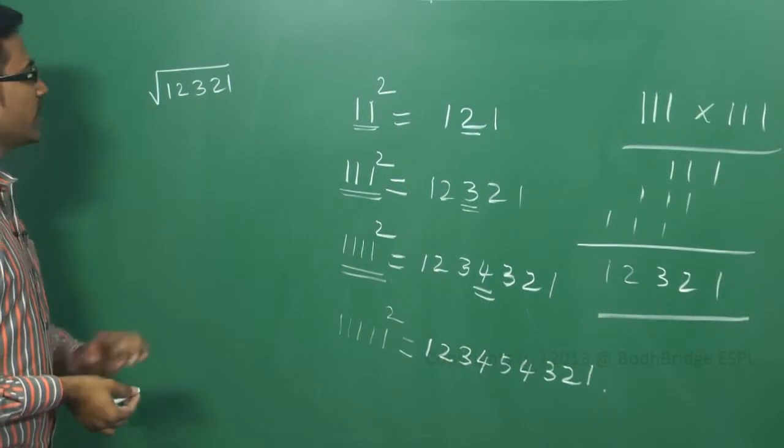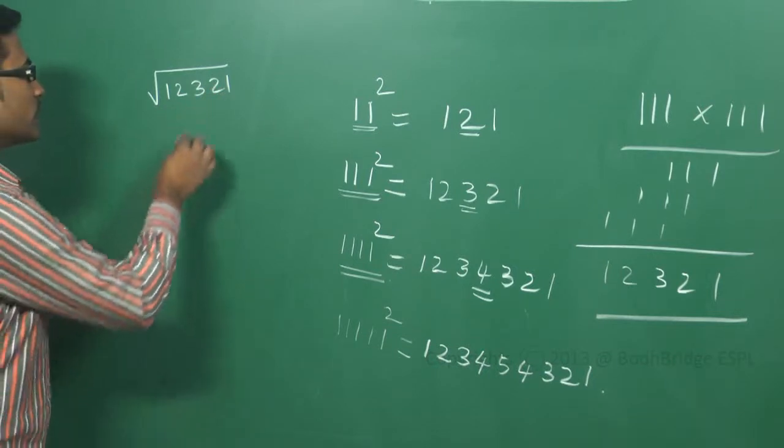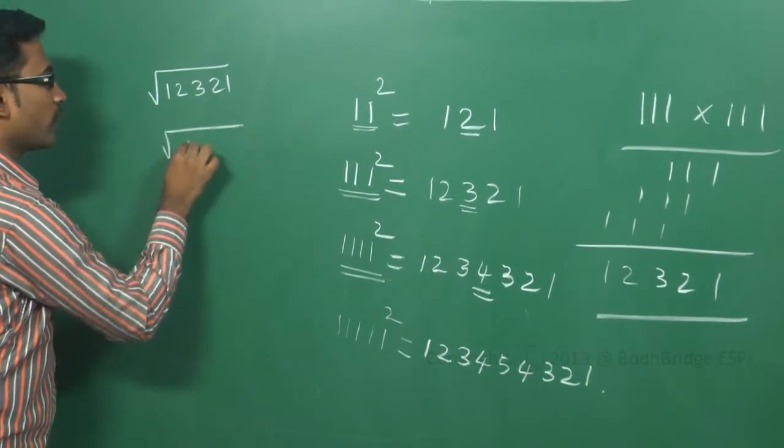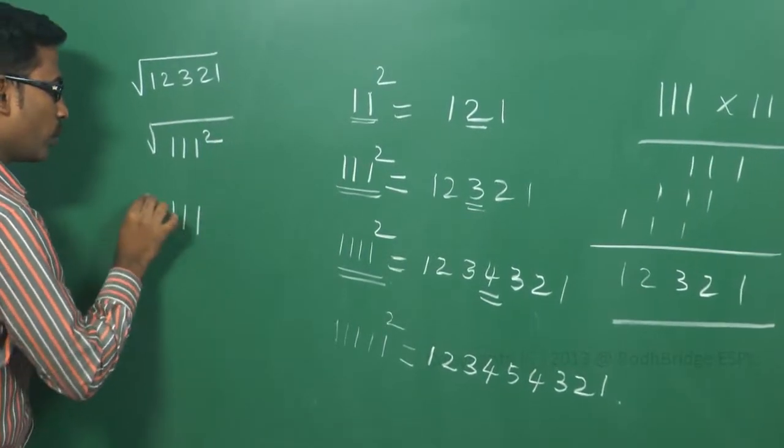We already know 3 ones square is equal to 1, 2, 3, 2, 1. So I can write this as square root of 111 square. So the answer will be 111.